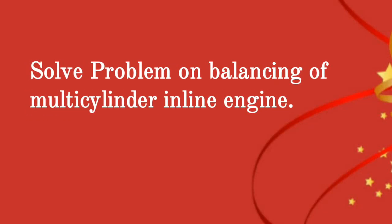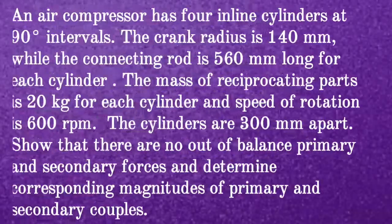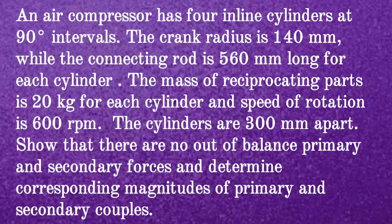Solve one problem on balancing of a multi-cylinder inline engine. An air compressor has 4 inline cylinders at 90-degree intervals. The crank radius is 140 mm while the connecting rod is 560 mm long for each cylinder. The mass of reciprocating parts is 20 kg for each cylinder and speed of rotation is 600 rpm. The cylinders are 300 mm apart. Show that there are no out-of-balance primary and secondary forces, and determine the corresponding magnitudes of primary and secondary couples.